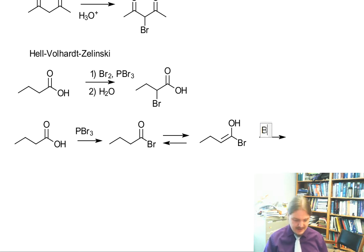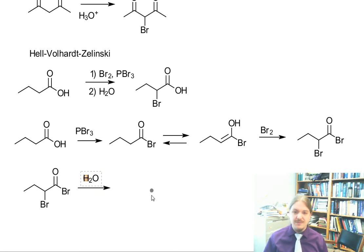And then this reacts with Br2 the way you might expect to make the dibromide. And then this acid bromide is easily converted back to the carboxylic acid by hydrolysis in water. Acid bromides, like acid chlorides, are really very reactive with nucleophiles at the carbonyl position. So here it is, the Hell-Volhardt-Zelinski reaction.